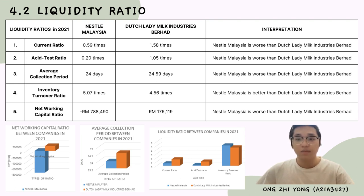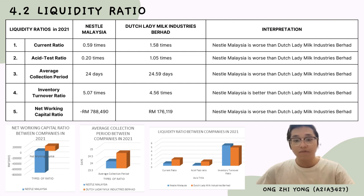Based on the data, the current ratio of Nestlé Malaysia is 0.59 times, which is worse than Dutch Lady Milk Industry Berhad at 1.58 times. The acid test ratio of Nestlé Malaysia is 0.27 times, less than Dutch Lady Milk Industry Berhad at 1.0 times. The average collection period of Nestlé Malaysia was 24 days, slightly better than the 24.59 days recorded by Dutch Lady. The inventory turnover ratio of Nestlé Malaysia was 5.07 times, better than Dutch Lady's 4.56 times. The net working capital of Nestlé Malaysia is negative 788,419 ringgit, worse than Dutch Lady at 176,119 ringgit, showing that Dutch Lady is more quickly able to convert its assets to cash to meet payment obligations.